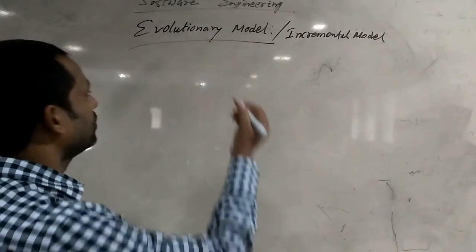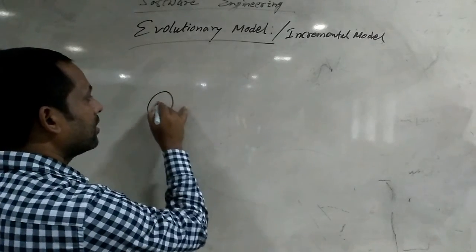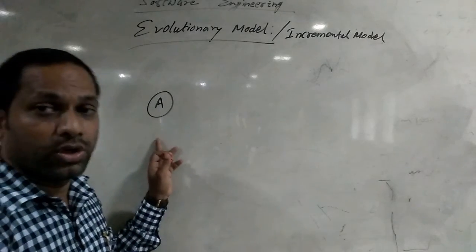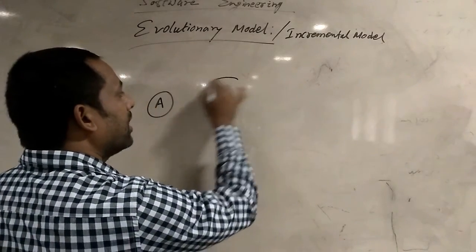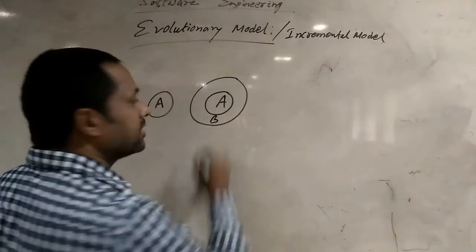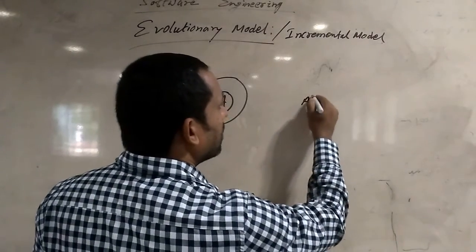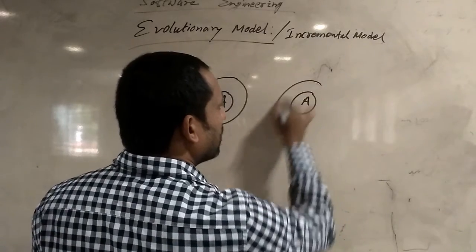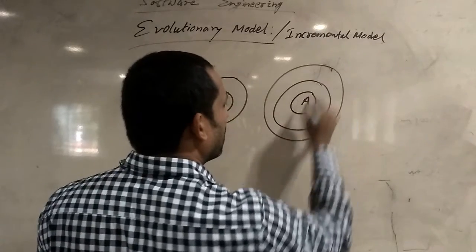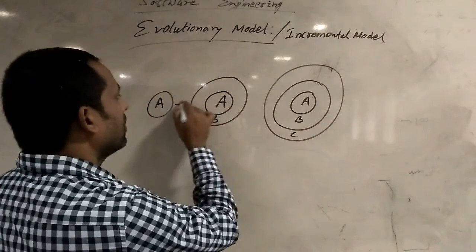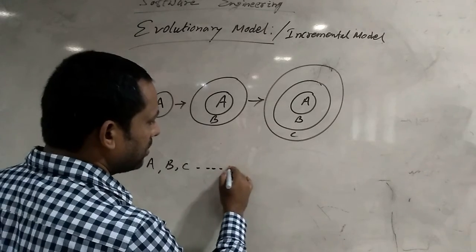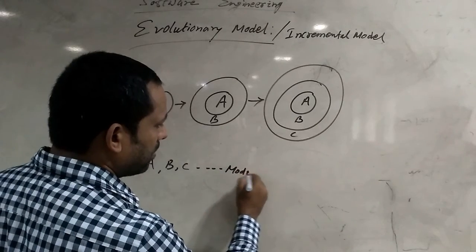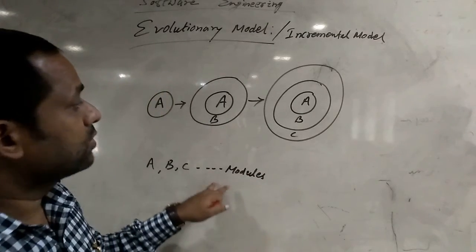For example, the first module is A and this is the core module. After that, there is another module, for example module B. After that, there is another module, for example module C. So here we have modules A, B, C, and so on. These are the modules.